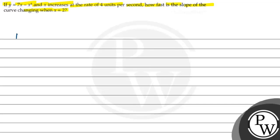how fast will the slope of the curve changing when x is equal to 2? So, the question is about slope as a rate of change.